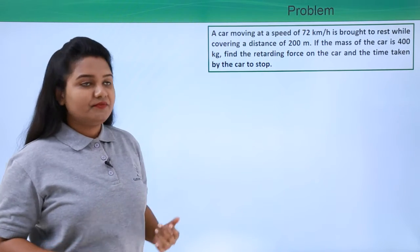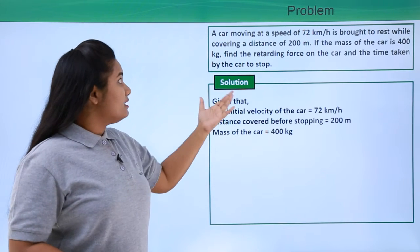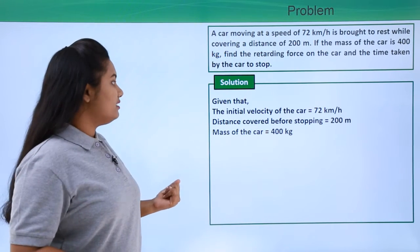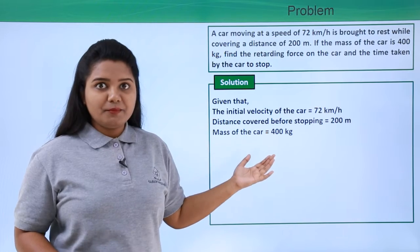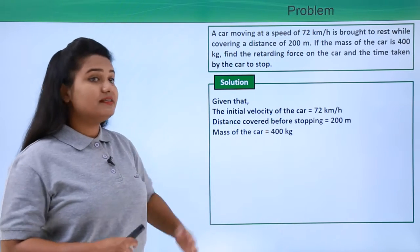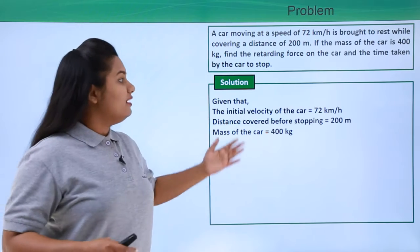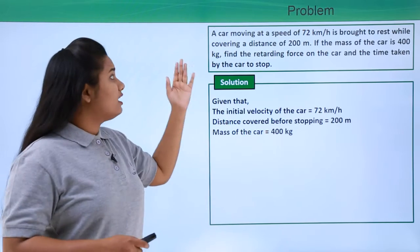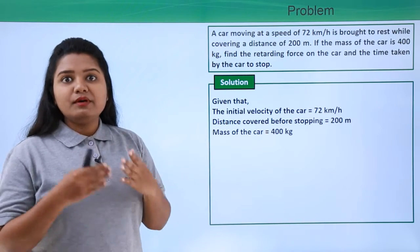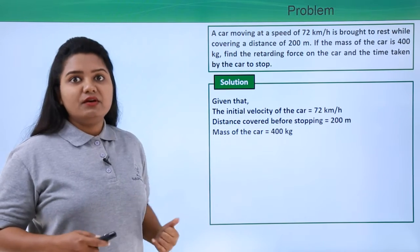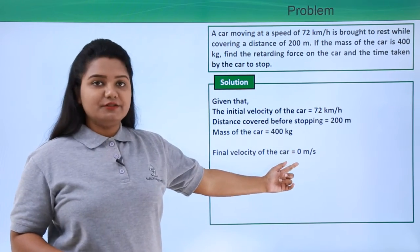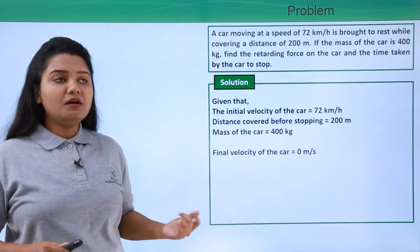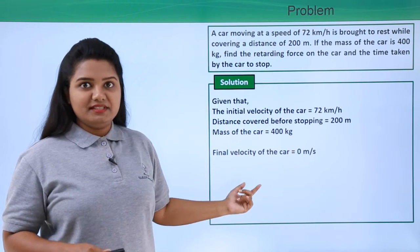The information about the car: it is given that the initial velocity of the car is 72 kilometers per hour. The stopping distance of the car is 200 meters, and the mass of the car is given to be 400 kilograms. Now the car has eventually come to a stop, so its final velocity we can take as zero meters per second.